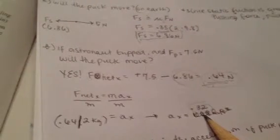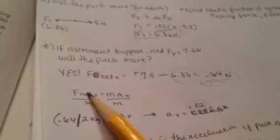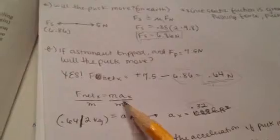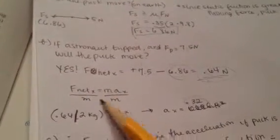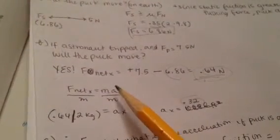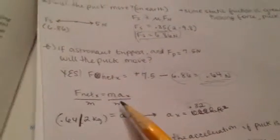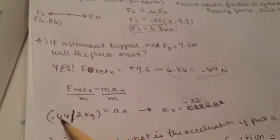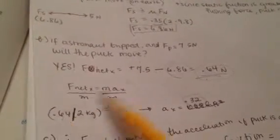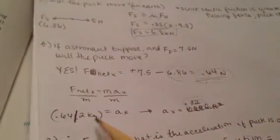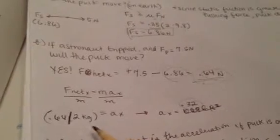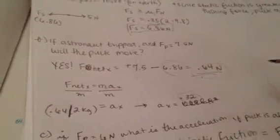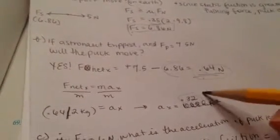The puck has an acceleration of 0.32 meters per second squared. We know F_net equals mass times acceleration, so solving for acceleration: F_net_x divided by the mass gives us 0.64 newtons divided by 2 kilograms, which equals 0.32 meters per second squared.